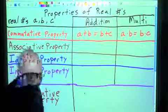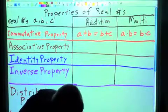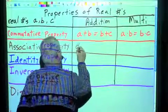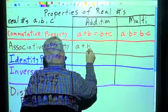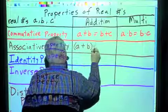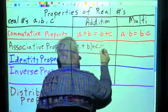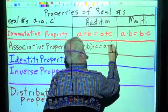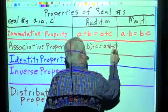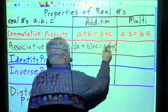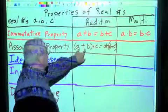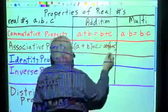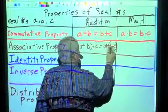Associative property — association. The associative property says that for real numbers A, B, and C, we can go (A plus B) plus C equals A plus (B plus C). So it doesn't matter how we associate them. We can associate the A and the B together, or we can associate the B and the C together.